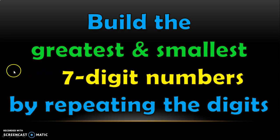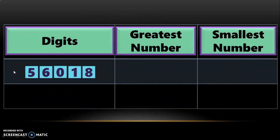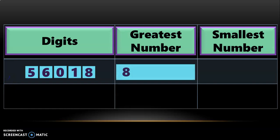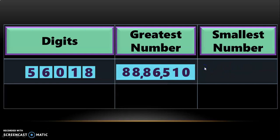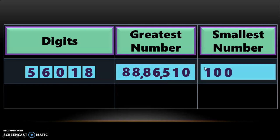Now, building greatest and smallest 7-digit numbers by repeating the digits. Given 5 digits, to frame the greatest 7-digit number, repeat the greatest digit as many times as necessary — repeat it 2 more times, then arrange the remaining digits 6, 5, 1, 0 from big to small. Adding periods, the greatest 7-digit number is 88,86,510. To frame the smallest, repeat the smallest digit 0 two more times, then arrange remaining digits 5, 6, 8 from small to big. The smallest 7-digit number is 10,00,568.